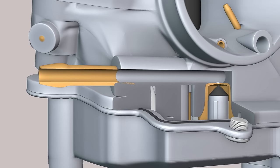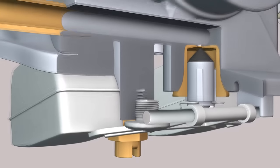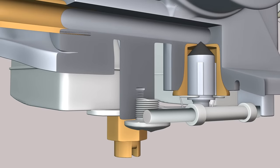Fuel enters the float chamber through this channel. When the fuel level reaches the set level, the float closes the channel with the needle.